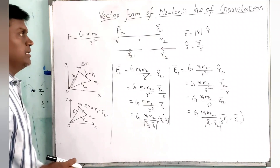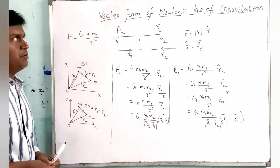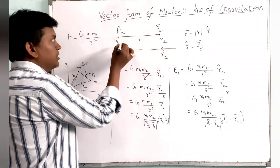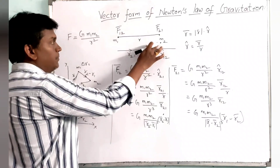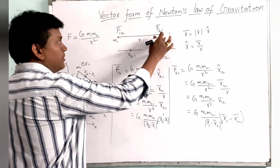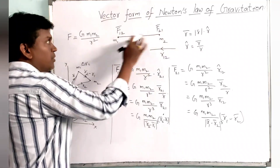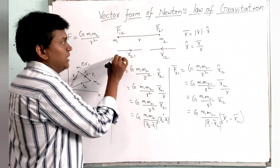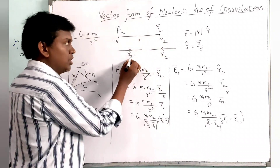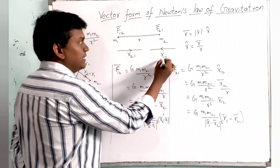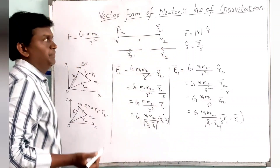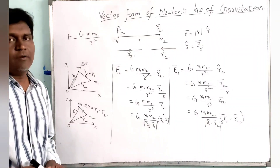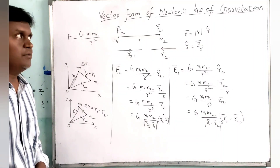This is the vector form of Newton's law of gravitation. While considering the masses, the force on mass M1 due to M2 is F12, directed towards M1 from M2, and the force on mass M2 due to M1 is F21, directed towards M2 from M1. By solving these, we obtain the complete vector form of Newton's law of gravitation.